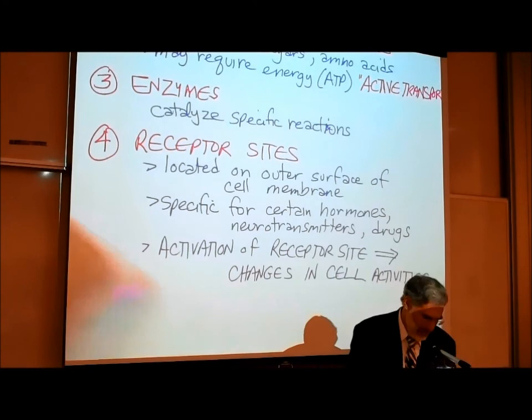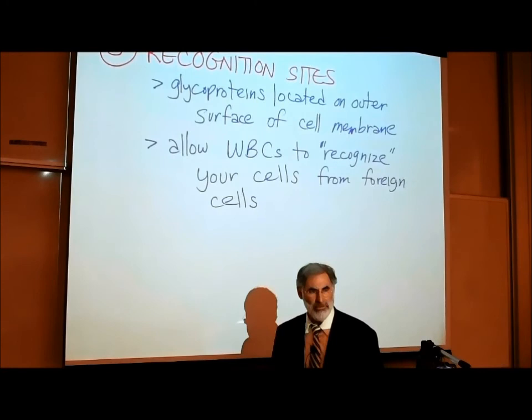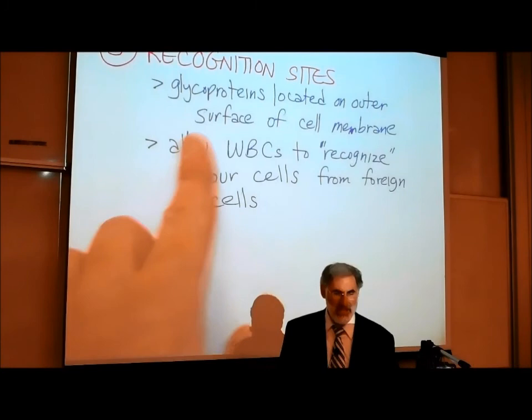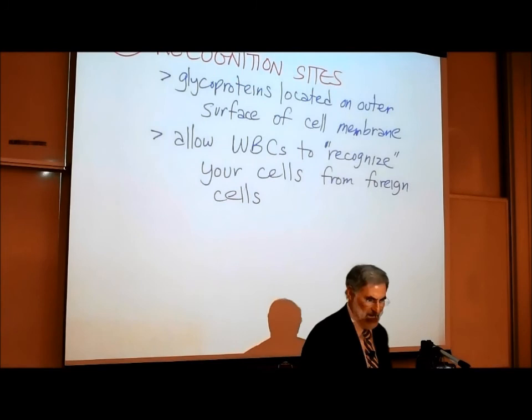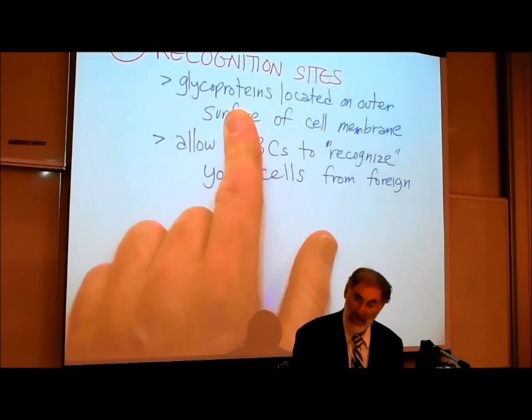One more role of proteins: recognition sites. These are glycoproteins located on the outer surface of the cell membrane, just like receptor sites. They are proteins with glucose or sugars attached. They are called recognition sites because they allow your white blood cells to recognize your own cells from foreign cells.